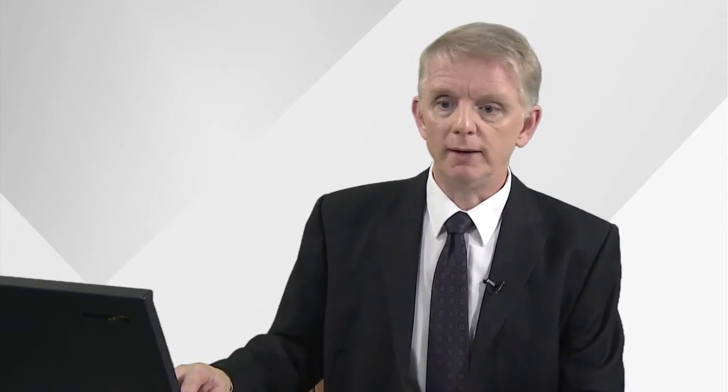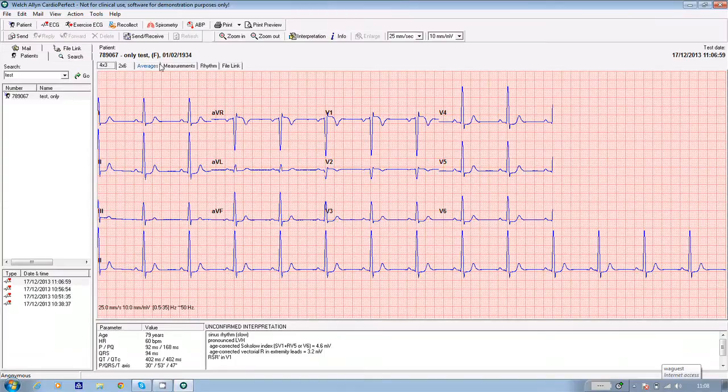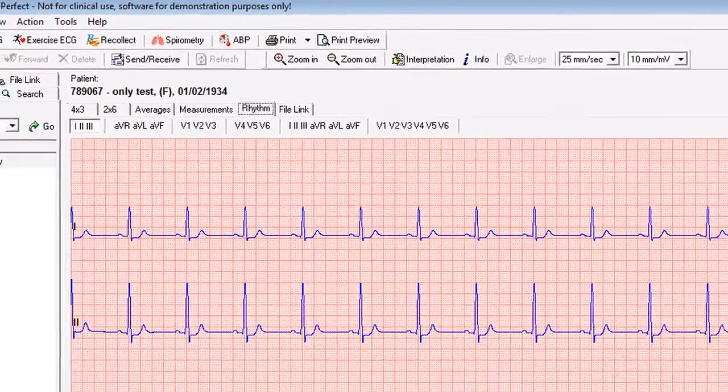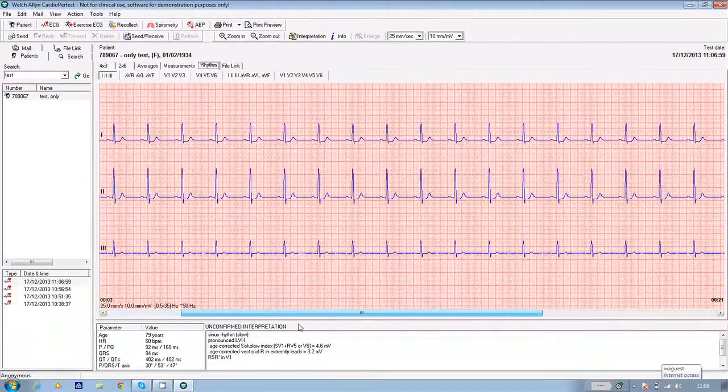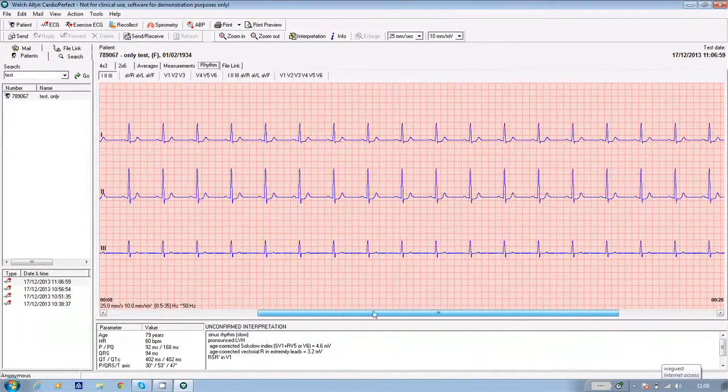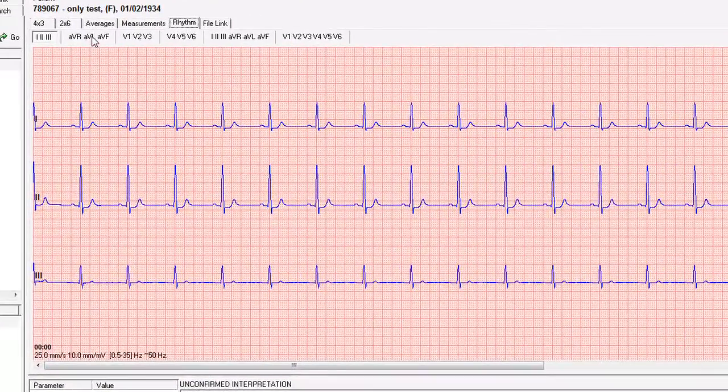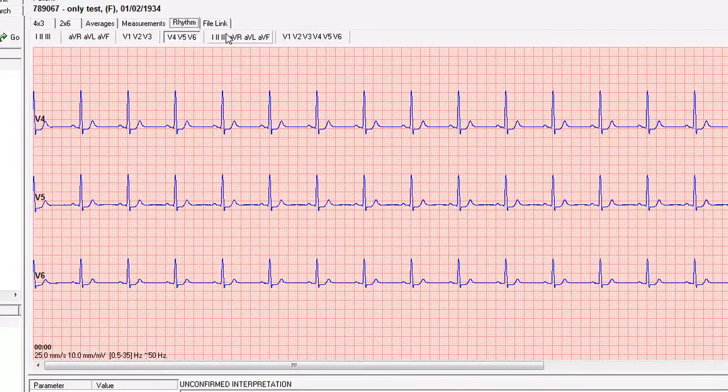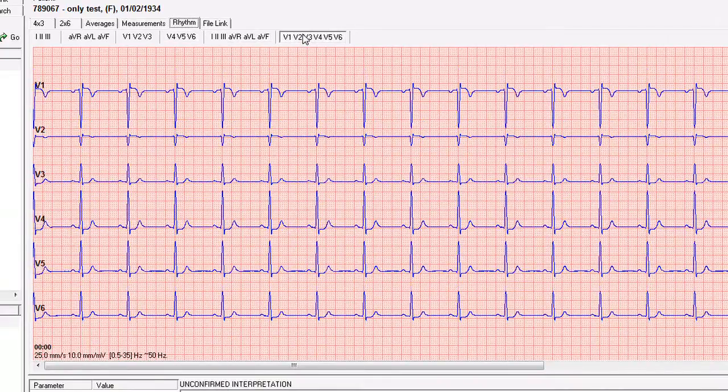Now, to look at rhythm ECGs, go back into your software, open your test in the same way, click on the rhythm tab above the ECG and use the slider bar to take you through the whole test. You can do this in four groups of three leads or two groups of six.